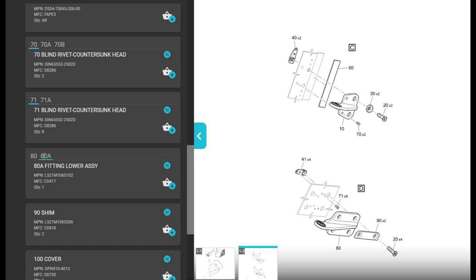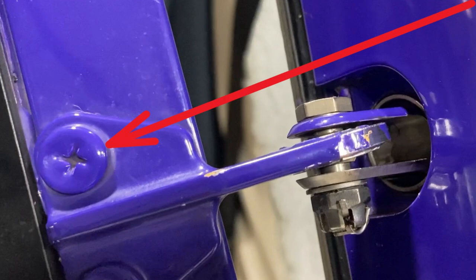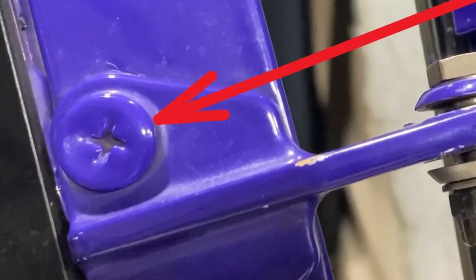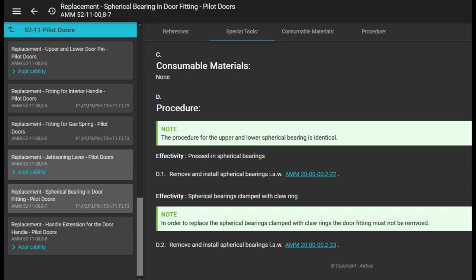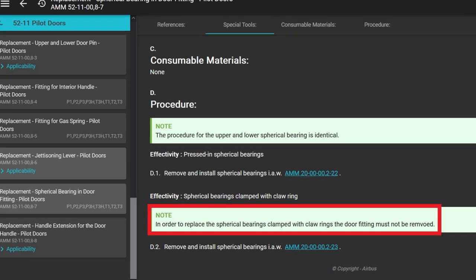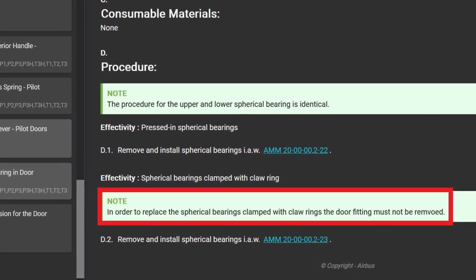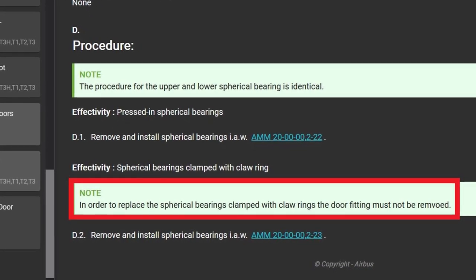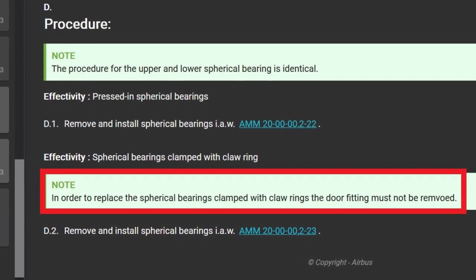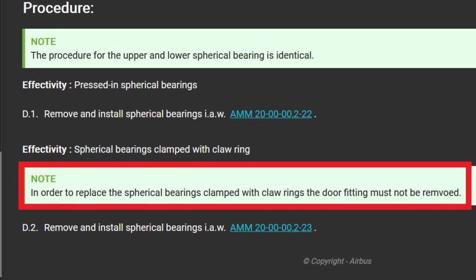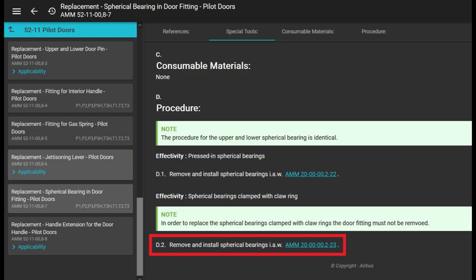If you're going to replace the pilot door bushings, look, the pilot door, the fittings on the door, they're held on by the bottom fittings held on by four screws and the top fittings held on by two screws and two rivets. But look, they're painted over real nice with real pretty paint. And it's very difficult to take off and you don't want to re-rivet this part. The maintenance manual says in order to replace the spherical bearings clamped with claw rings, the door fittings must not be removed. I can understand that on the pilot side, but on the clamshell doors, definitely take them off. It's super easy. So if you're going to do the pilot doors, you're going to have to have like two guys hold the door in the right spot while you use your arbor press to pop these bearings out and to install the new ones.